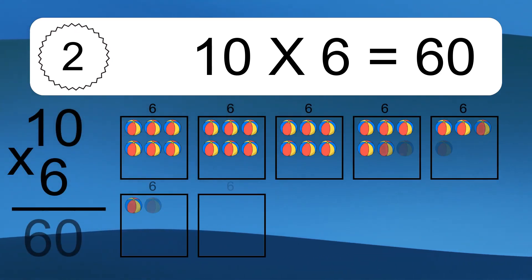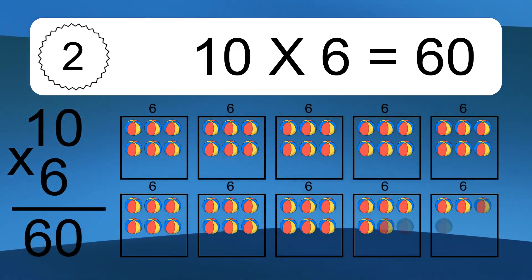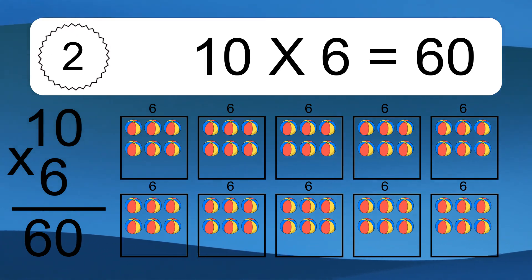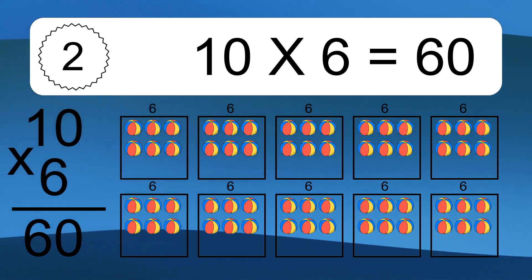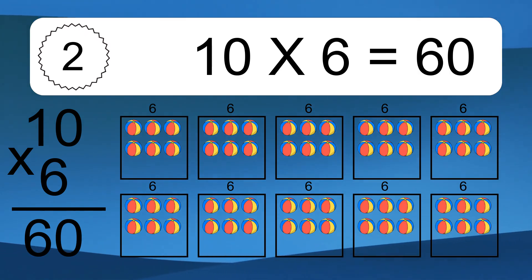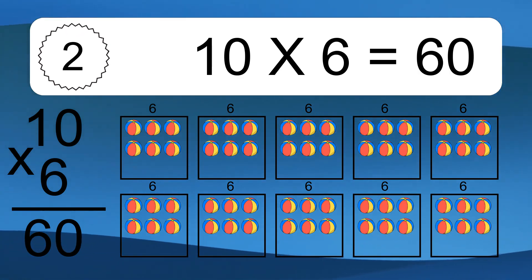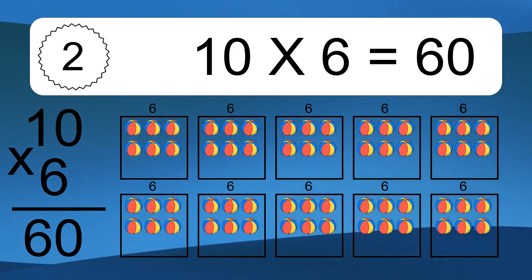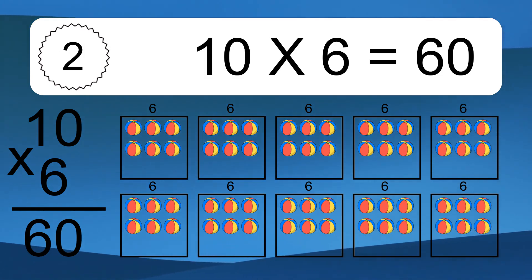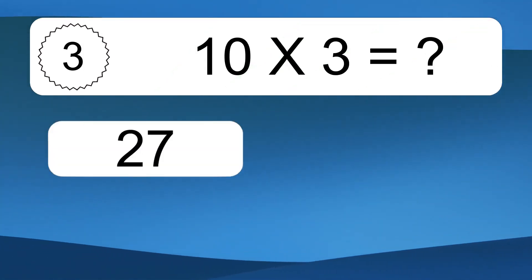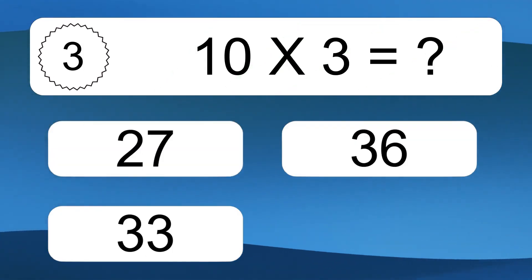10 times 6 equals 60. We have 10 boxes, and each box has 6 colorful balls inside. If you count all the balls in all the boxes together, you will have 10 times 6 balls. This equals 60 balls.